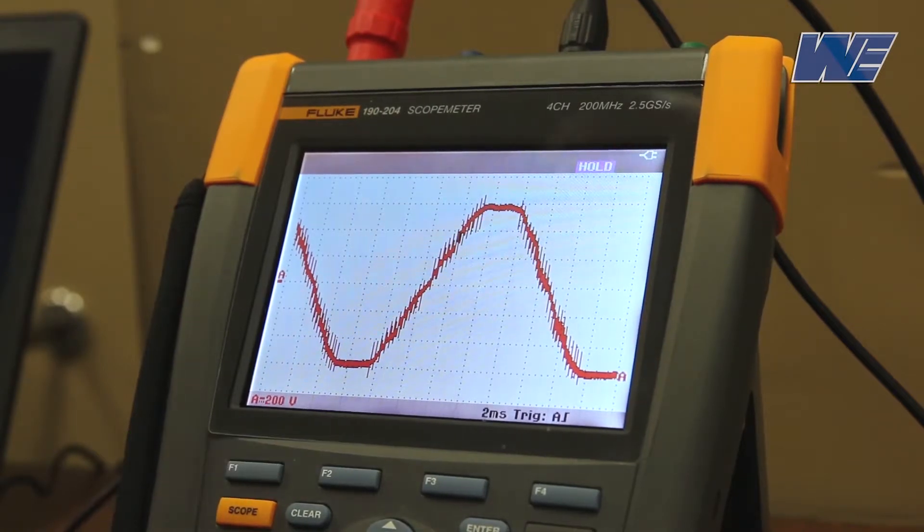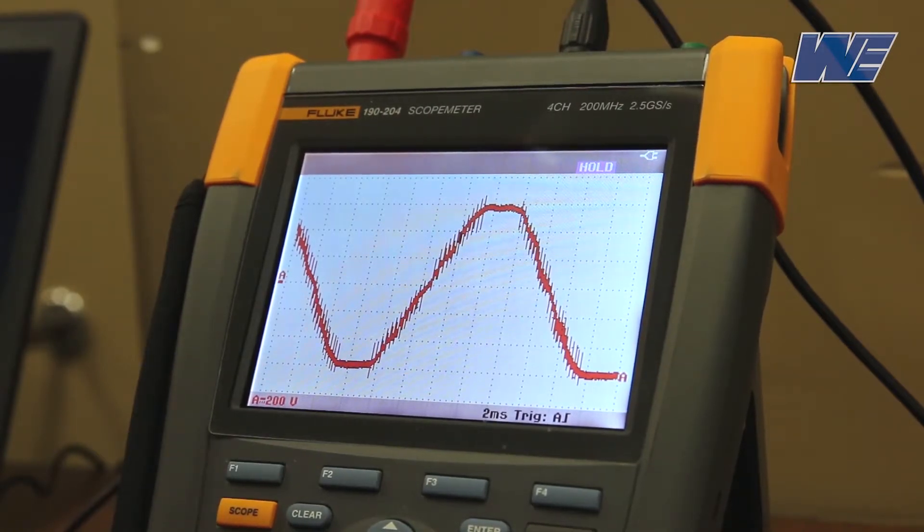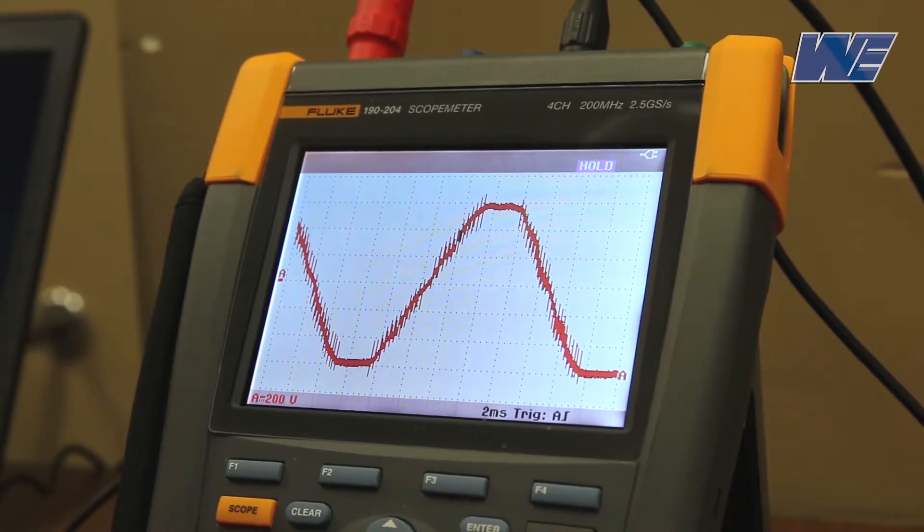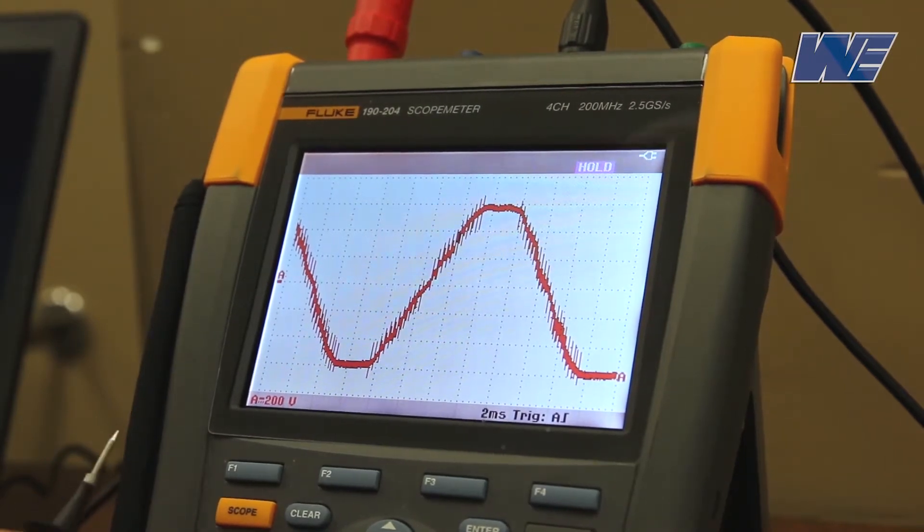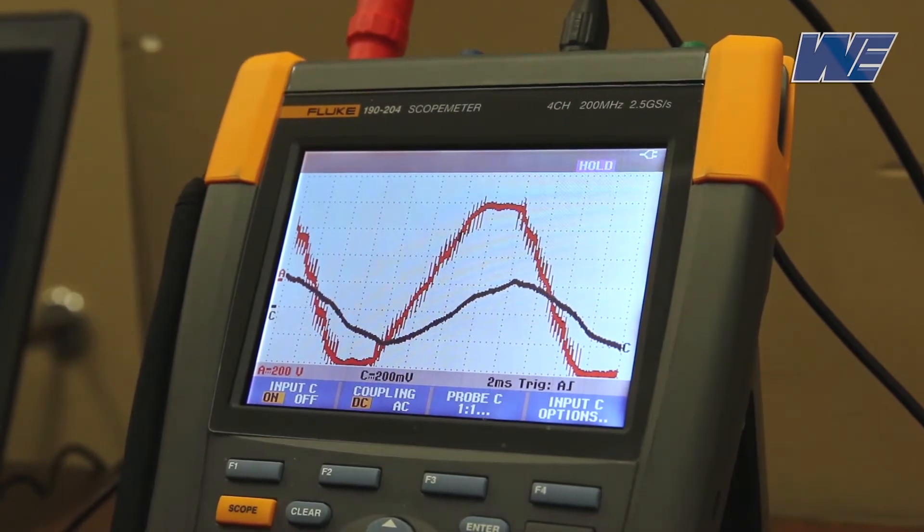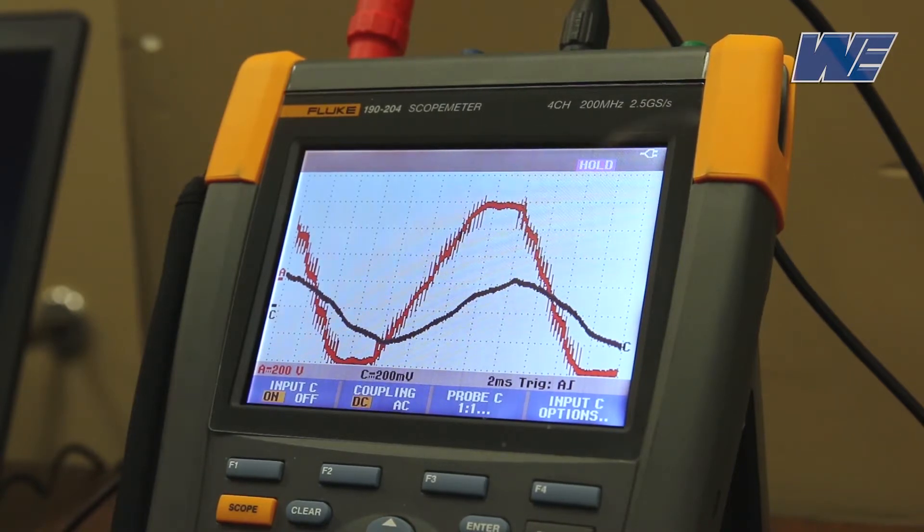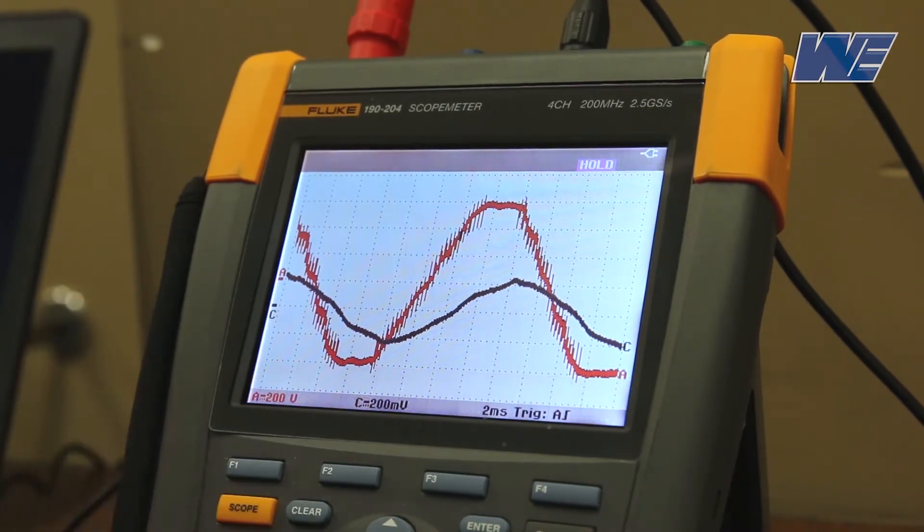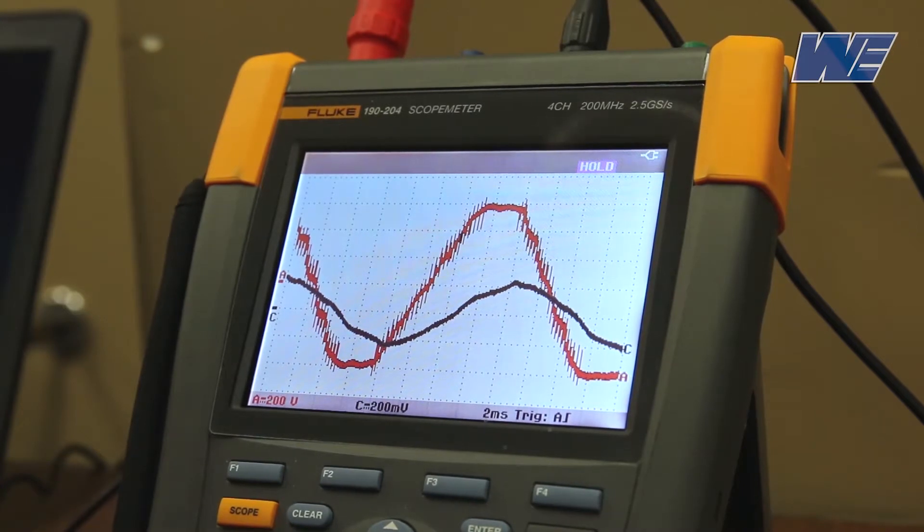You can see that the output voltage is now much more sinusoidal than the previous pulse width modulated outputs. I'll bring in the output current so we can look at that also. You can see that the output current is still fairly sinusoidal. The motor acts somewhat like a low pass filter for the current waveform.